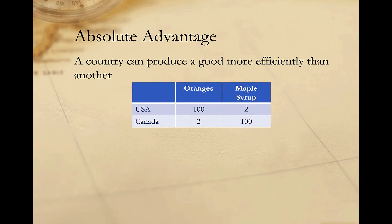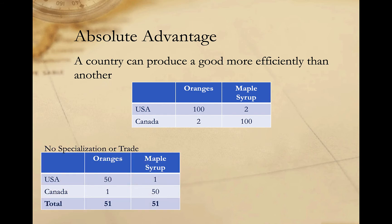In this hypothetical example, the United States has absolute advantage in producing oranges, while Canada has absolute advantage in producing maple syrup. Let's say that both countries want both goods. If they divide their time equally between the two, the United States would produce 50 oranges and one maple syrup, while Canada would produce 50 maple syrup and one orange. Globally, we'd have total production of 102 units — 51 oranges and 51 syrups.